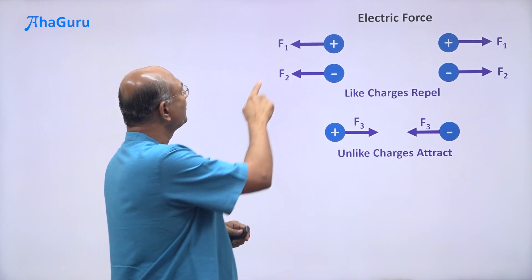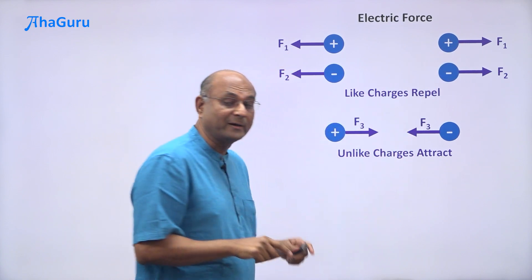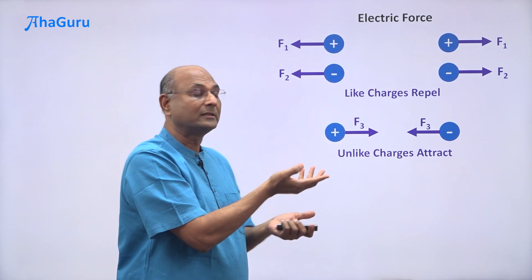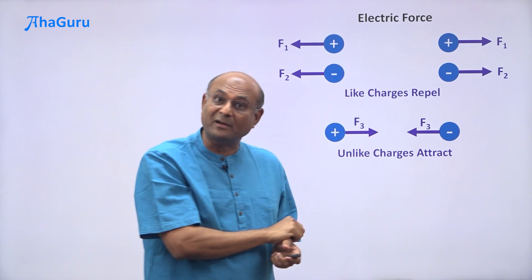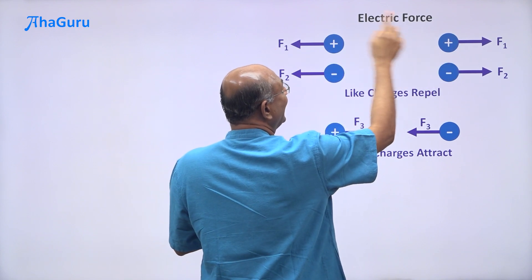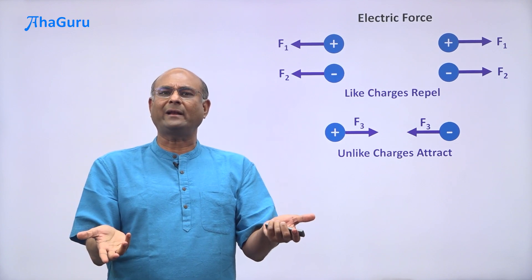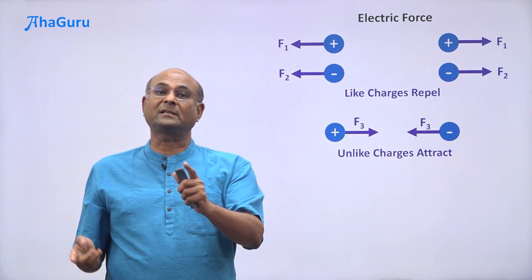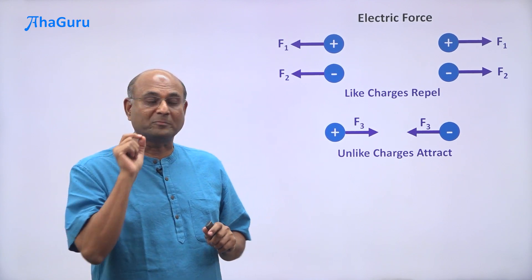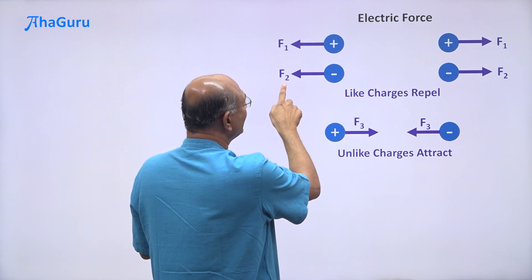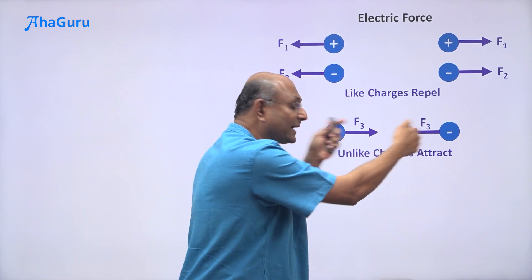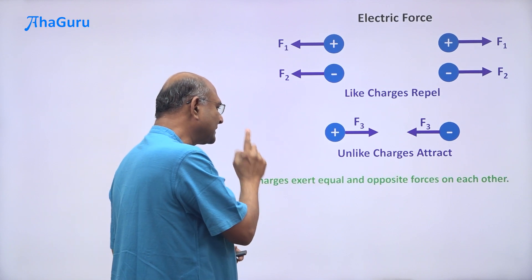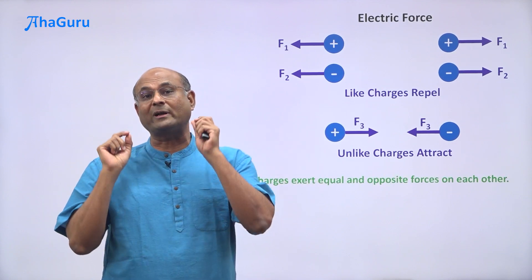Notice something interesting. This force is F1 and that force is also F1 — they are in opposite directions but have the same magnitude. These two charges could have been different; this could have been 2 coulombs and that could have been 7 coulombs — it doesn't matter, the forces are equal and opposite. Because Newton's third law says object A exerts a force on object B, and object B must exert the same amount of force in the opposite direction on object A. So these two forces have to be equal and opposite. Even the attractive forces are equal in magnitude and opposite in direction, so charges always exert equal and opposite forces on each other.